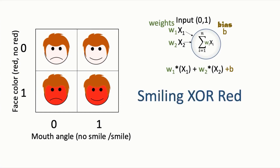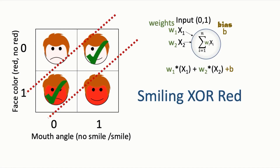Now let's look at XOR. XOR means the solution can only be either red or smiling, but not both red and smiling. This means your friend is bluffing when they are smiling and not red, or red and not smiling, but not both. This corresponds to the data points in the bottom left and the upper right. We don't have a single line that can be drawn to separate the data, and a single neuron can only handle linearly separable problems — meaning outputs separable by a single straight line.